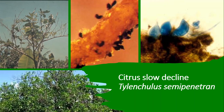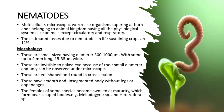This lecture is on citrus slow decline, caused by the citrus nematode known as Tylenculus semipenetrans. First of all, we must know what nematodes are. These are multicellular microscopic worm-like organisms tapering at both ends, belonging to kingdom Animalia and having all the physiological systems like animals except circulatory and respiratory systems.